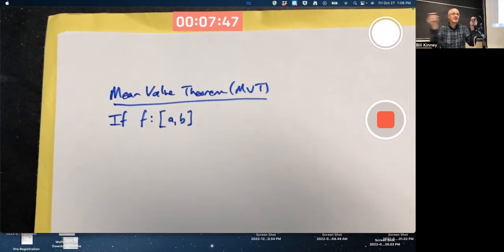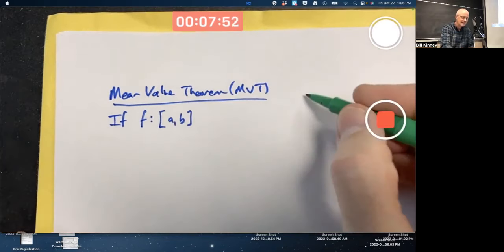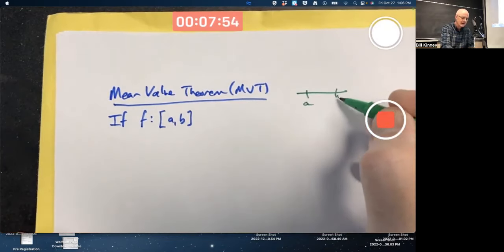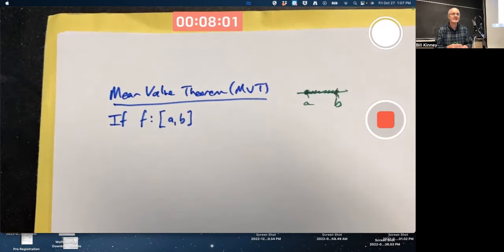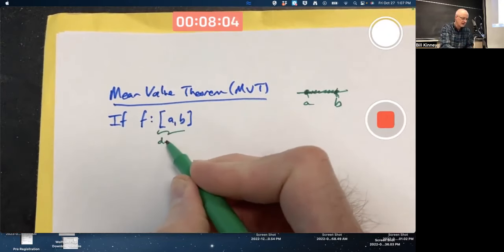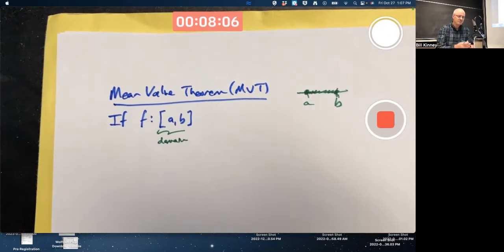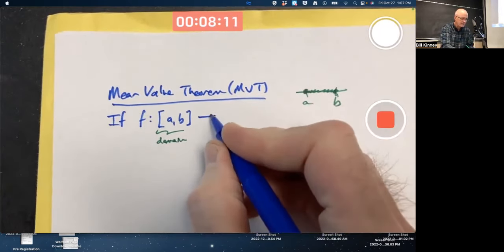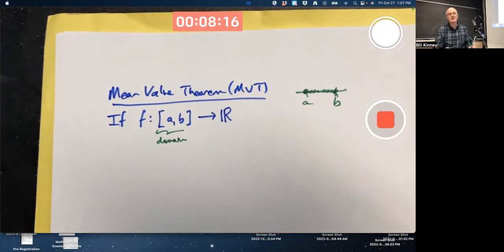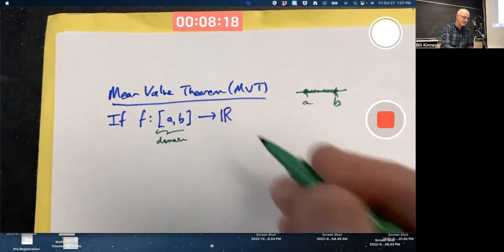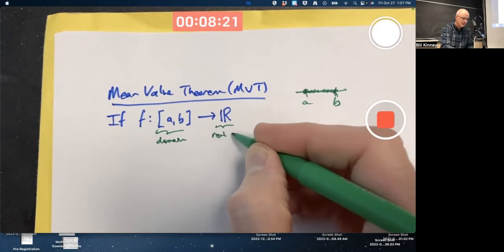It's assumed A is less than B. Imagine a number line. A is less than B. The closed interval from A to B includes every number between A and B and also the endpoints. That's the domain of the function, and the outputs are real numbers. I love making this fancy double-struck R for the real numbers.